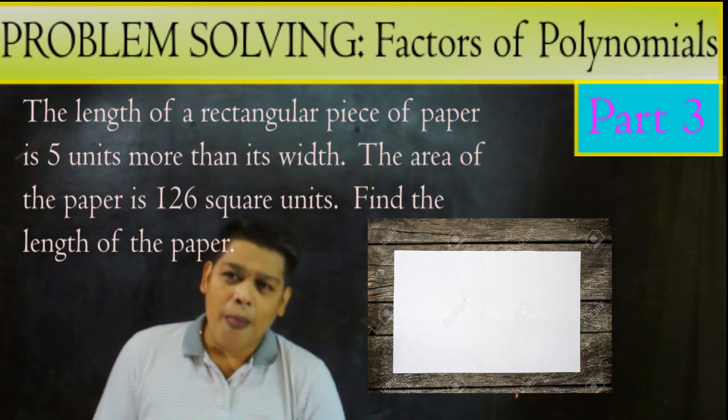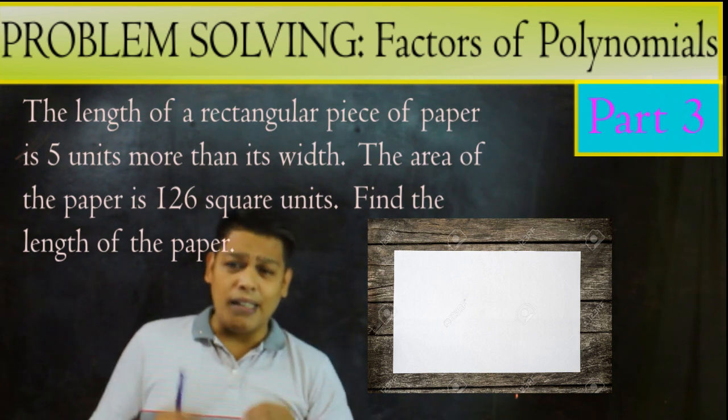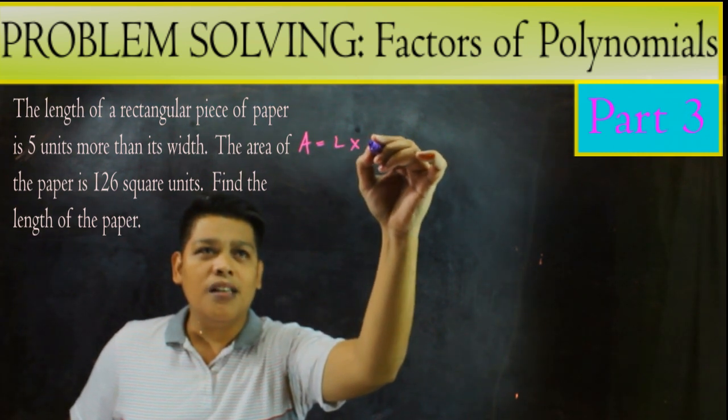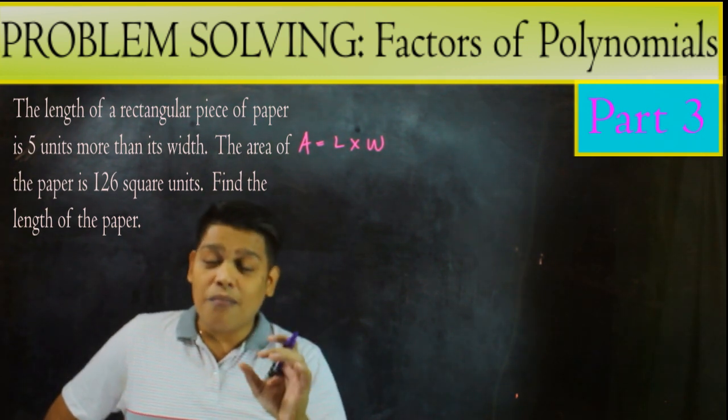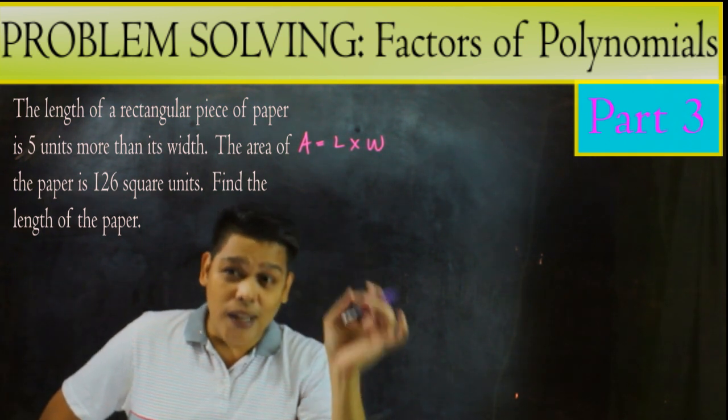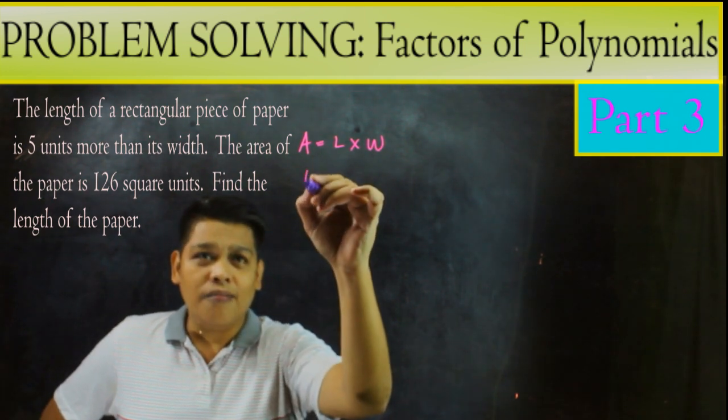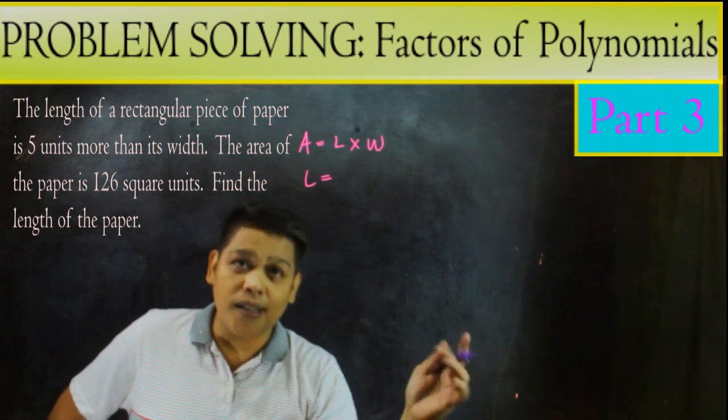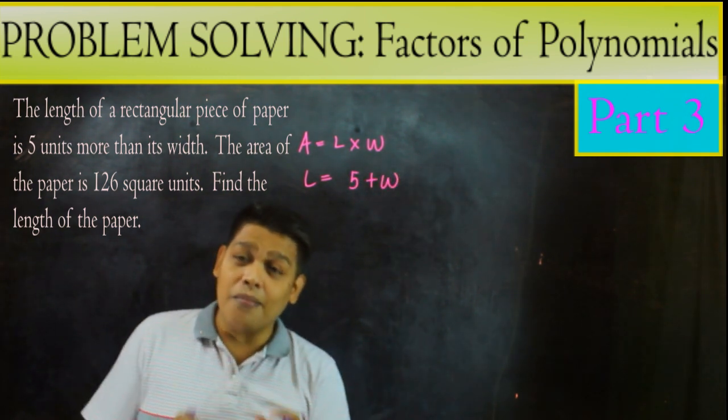So kung titingnan natin yung problem, so rectangular piece of paper. So pag-rectangular, recall natin na ang area is equivalent to length times the width. And then, ang sabi rito, the length is 5 units more than. So 5 more than the width. So ibig sabihin, kung ang width natin is W, ang length natin, mas mahaba ng 5. So ang length natin is 5 plus W.